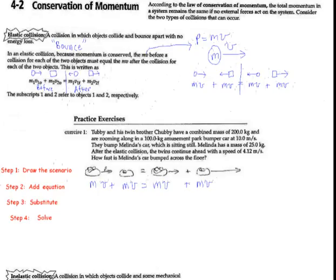So the first step is to draw the scenario, and the second step is to add the equation. And now the substitution is where the real physics comes in, so you can see what you're doing where. So the question is saying, how fast is Melinda's car bumped? So this is what we want to find out. And it's that V. So V is what we're going to solve for right there.